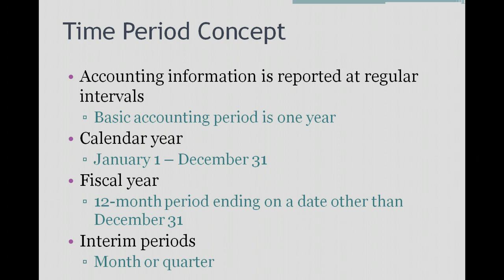Some companies prefer to report on a different 12-month period ending on a date other than December 31st. We call that a fiscal year basis. If it's a fiscal year, all that means is that the company prepares accounting information for a 12-month period ending on a date other than December 31st.